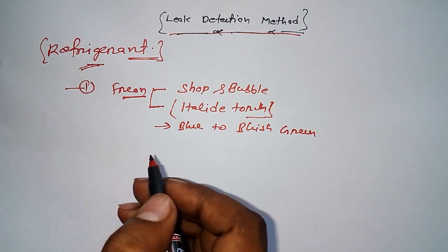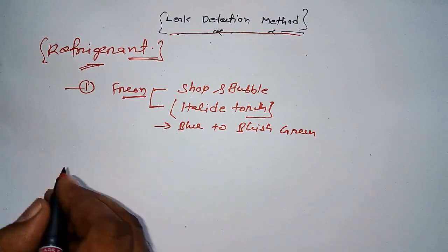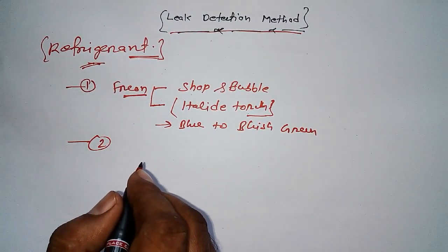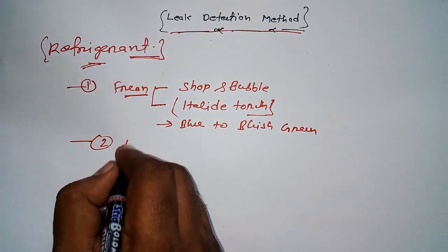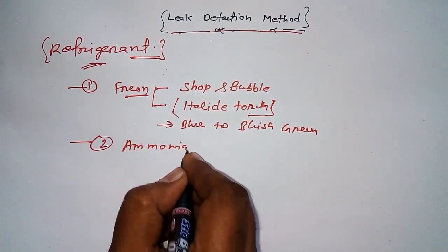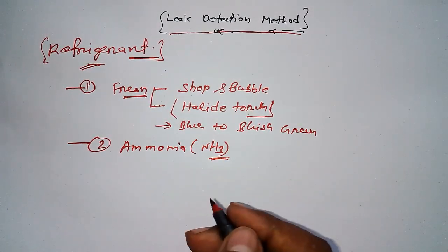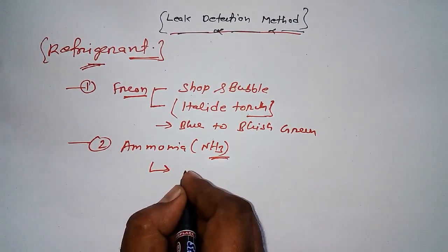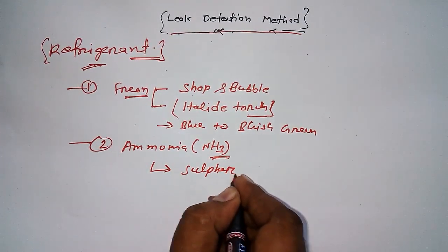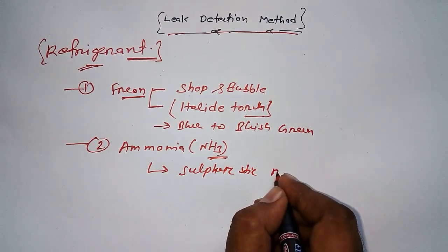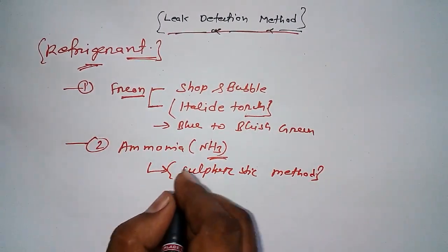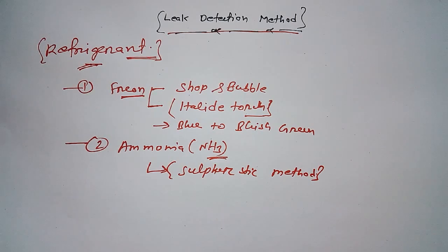Second is interesting. If we need to detect ammonia, NH3 refrigerant, then what kind of method can we use? The simple method is sulfur stick method. This is the universal one because ammonia refrigerant is used in ice plants, and there we use sulfur stick method to detect the leakage of refrigerant.